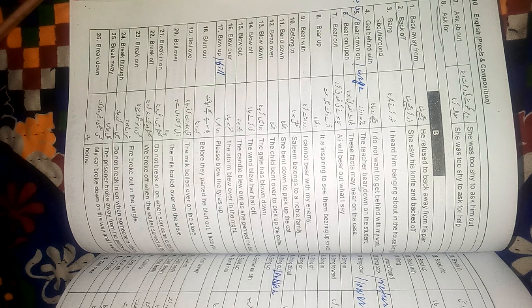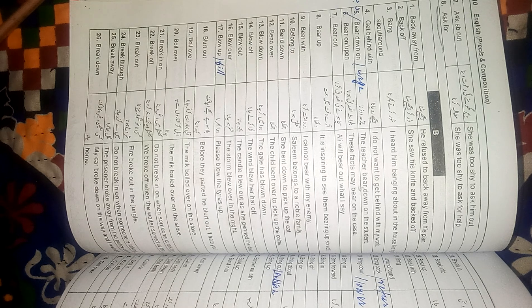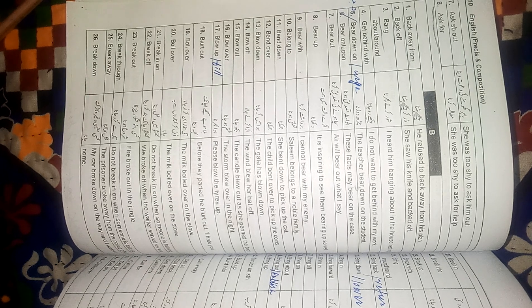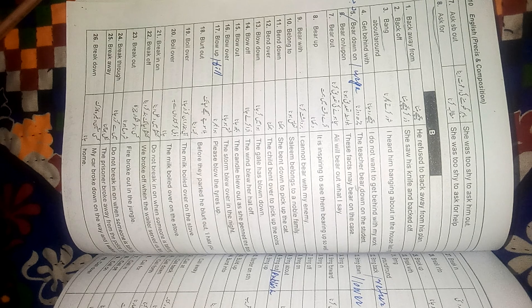The next word is 'boil over.' Boil over means when a liquid becomes so hot that it overflows from the container. For example: 'The milk boiled over on the stove' — meaning the milk got very hot and bubbled up and over the pot onto the stove.